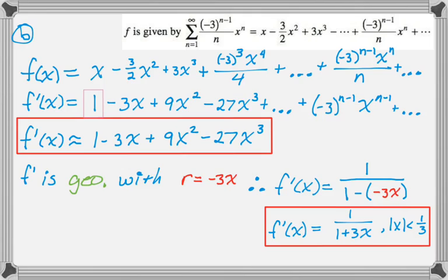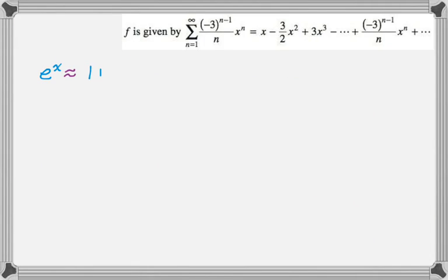where the absolute value of x is less than 1/3. So that's part b. And now part c is, I don't know, c has one easy point to get. You just have to write e^x to four non-zero terms. So there you go.